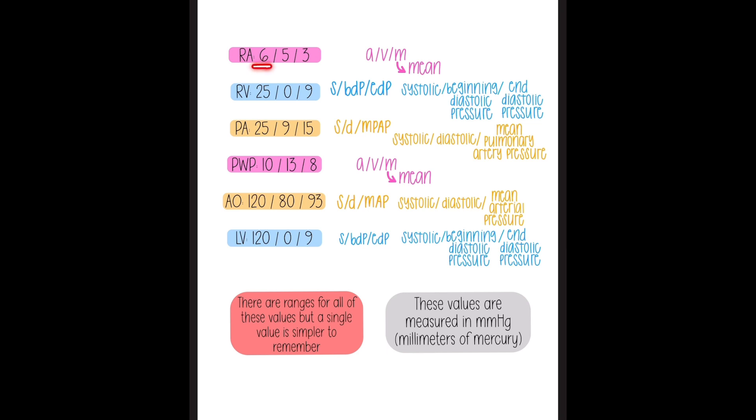So again, we're going to start here. This is A, V, mean. So A is six, V is five, mean is three. The left atrium or the pulmonary wedge pressure is written in the exact same way that 10 represents A, 13 represents V, and eight represents the mean.